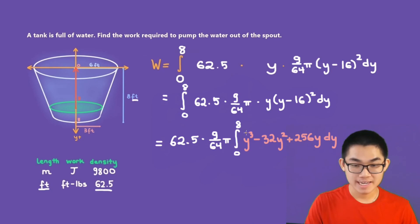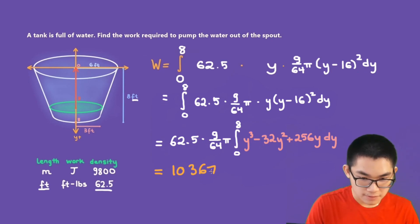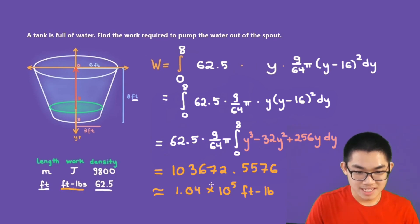Now after you find the antiderivative of this expression and then plug in the limit from 0 to 8, you will get the answer which is 1036720.5576. So that's what I get after evaluating this integral and you can approximate this into 1.04 times 10 to the power of 5 feet pound because the unit here is feet pound according to our table. And so this here is the answer and also the amount of work that it takes to empty this tank.